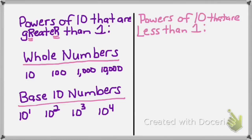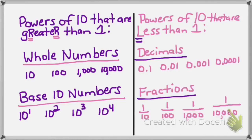Some powers of 10 are less than 1. Decimals and fractions with powers of 10 are less than 1. Decimals like 0.1, 0.01, 0.001, or 0.0001 are less than 1. Fractions that have a numerator of 1 and a denominator that is a power of 10 are also less than 1, like 1 tenth, 1 hundredth, 1 thousandth, or 1 ten-thousandth.